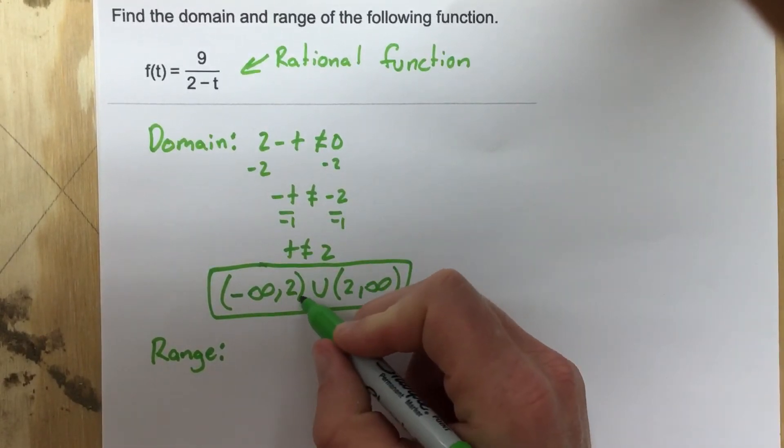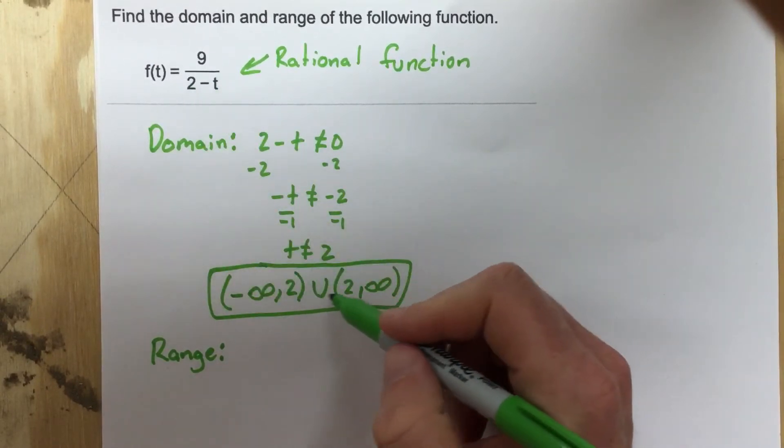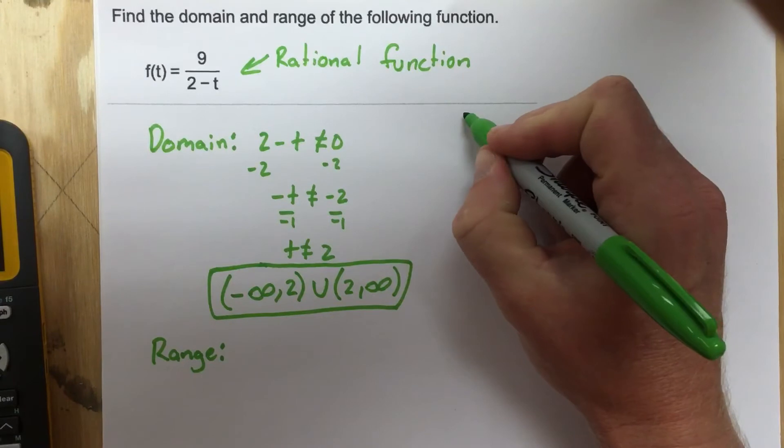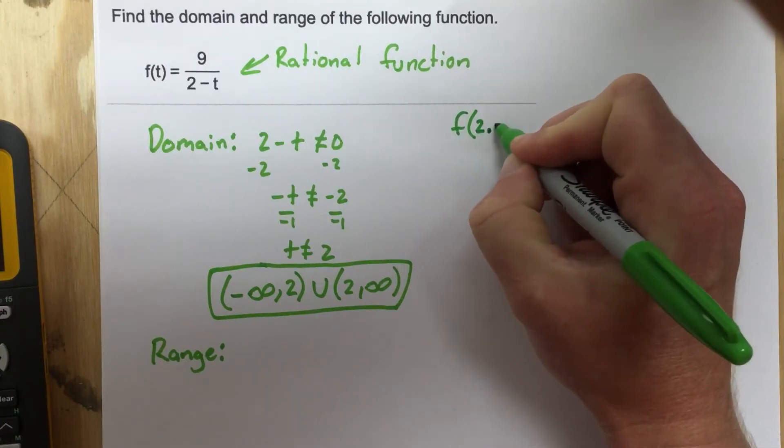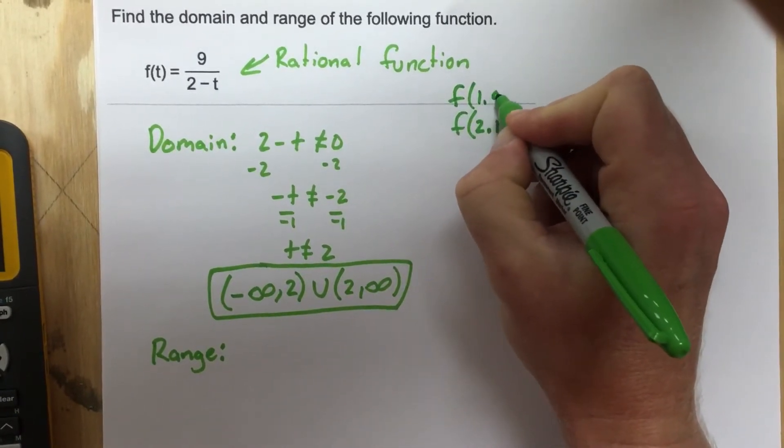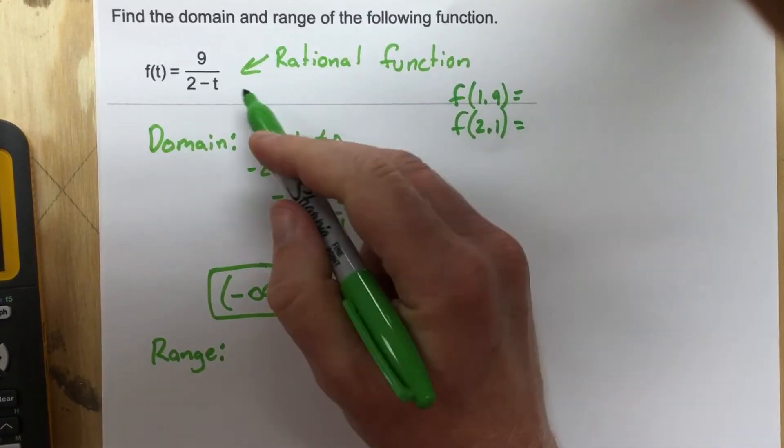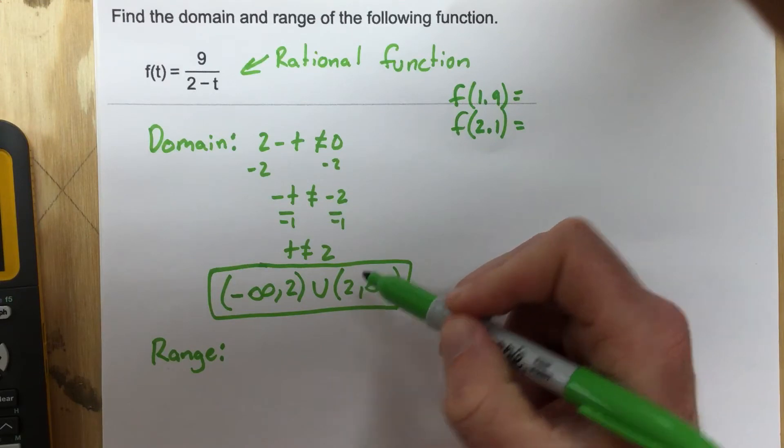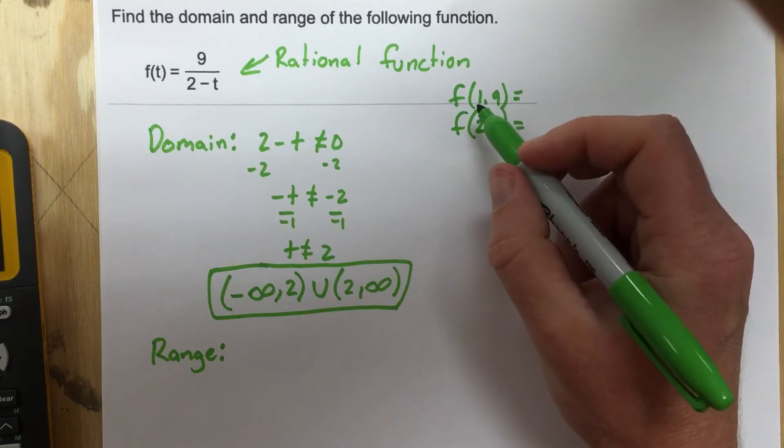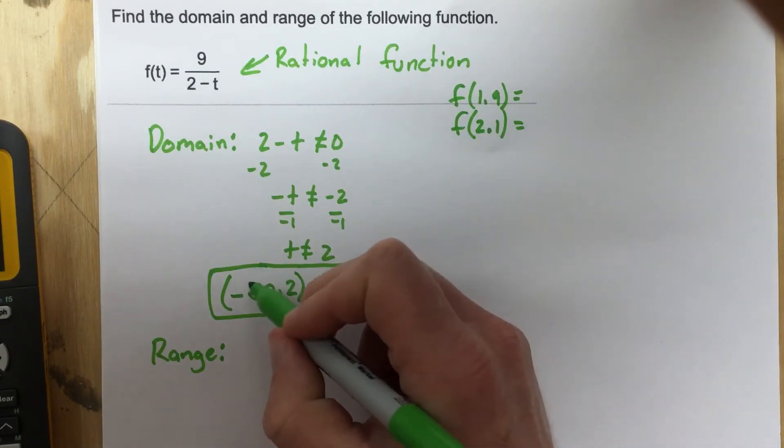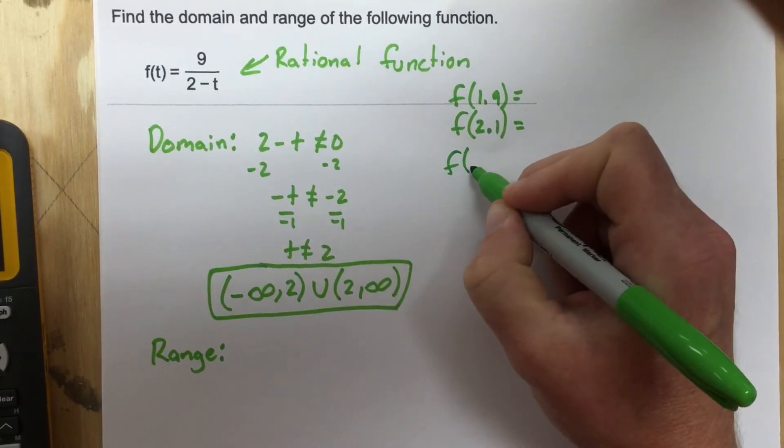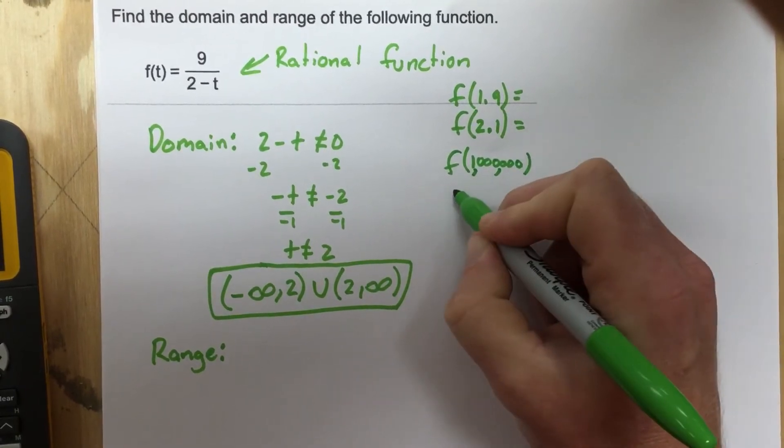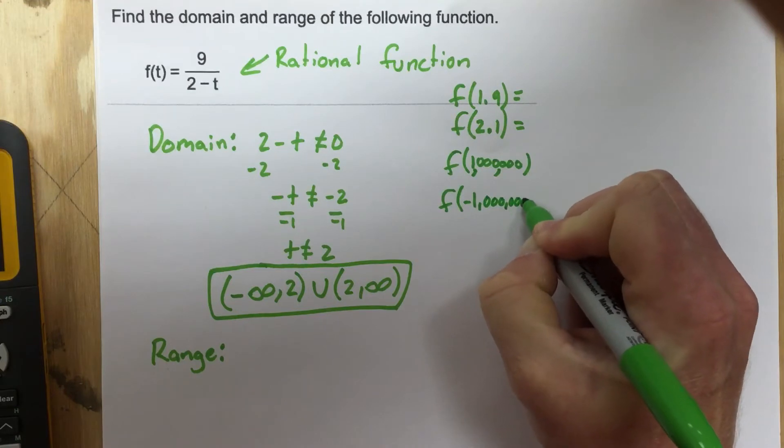The first thing we want to look at is we want to look at what happens as we get close to 2, what happens to the function as we get close to 2. So the first thing I'm going to do is I'm going to plug in, let's just call this f of, I'm going to show you what I'm going to plug in here, f of 2.1 and then f of 1.9. So we're going to plug in 1.9 and 2.1 because they're on either side of 2. So 1.9 is in this cluster and 2.1 is in this cluster of domain values, but it's close to 2, which is the value that doesn't work. And then we're going to pick some values that are close to infinity and close to negative infinity. So I'm going to pick f of a million and then f of negative a million and test both those out.